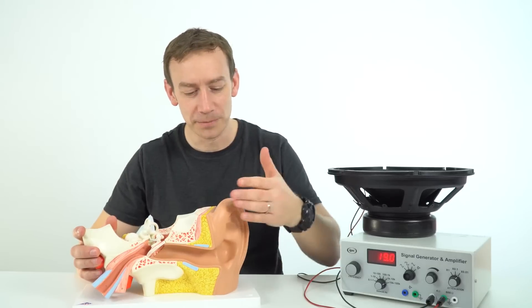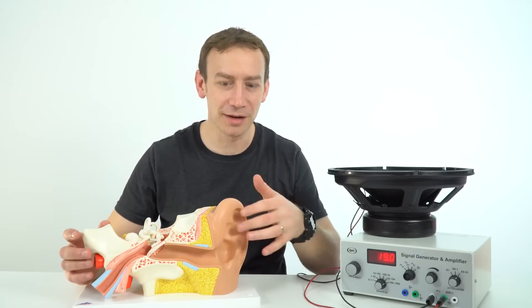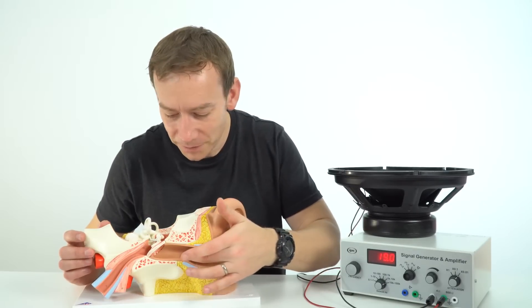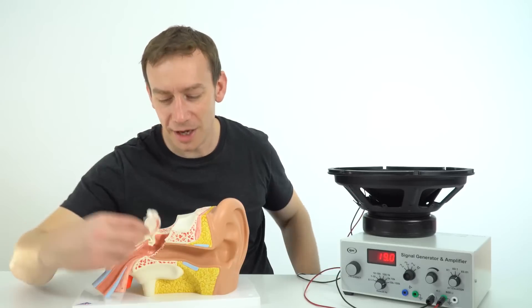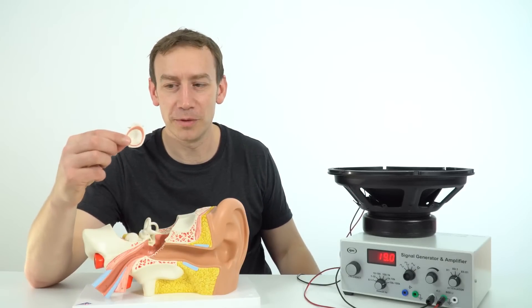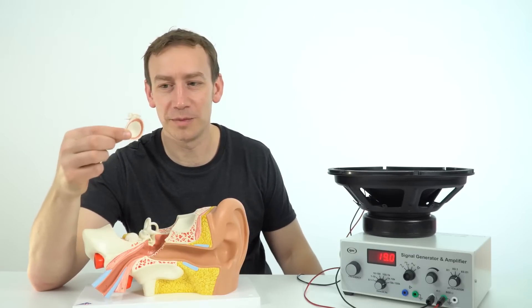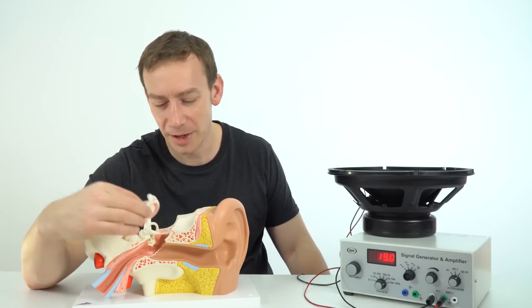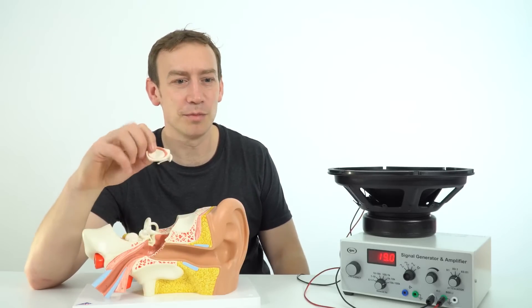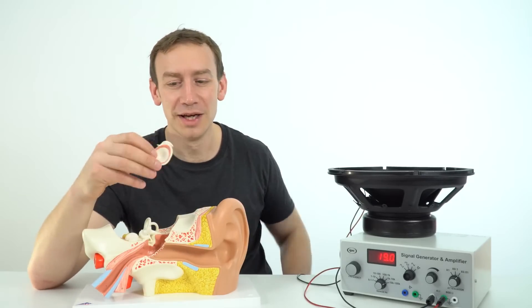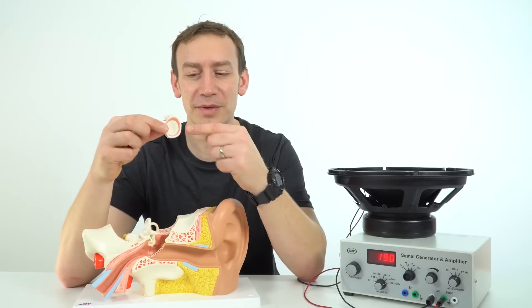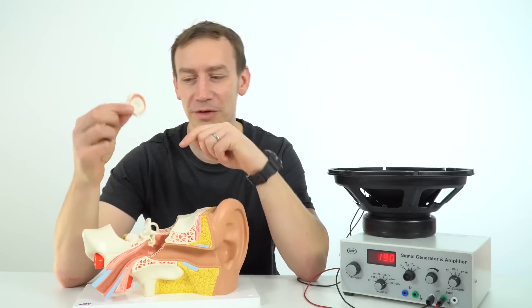So we've just got our ear, the outer part kind of channels the sound in. It comes down here and then it causes the eardrum to vibrate back and forwards. Now this can only vibrate back and forward so many times per second which is why we have an upper limit to what we can hear and as people get older they get less flexible and that means these things start to toughen up and that means they can't then flex back and forwards as quickly.